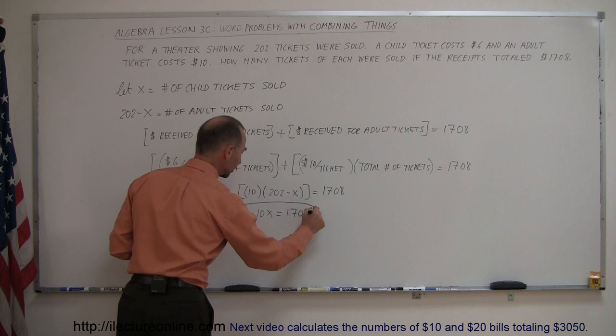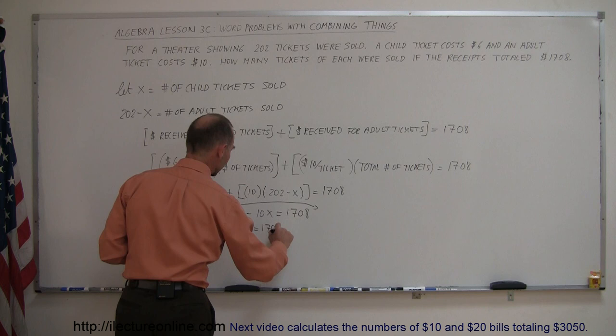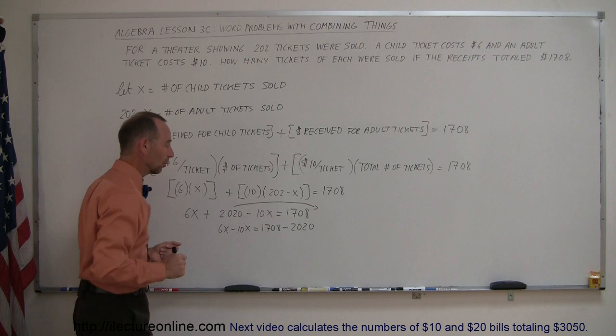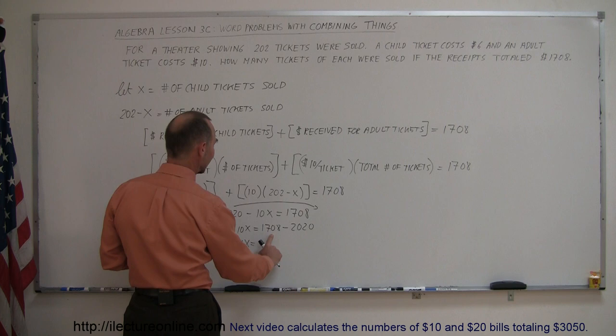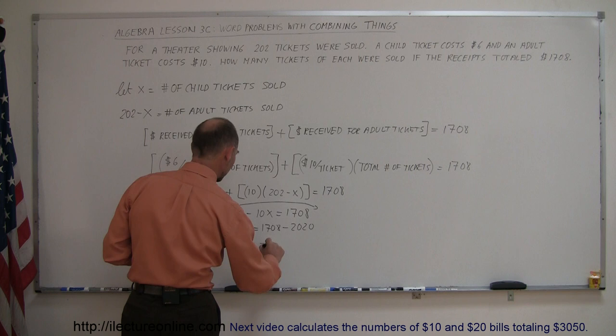We end up with 6X minus 10X equals 1,708 minus 2020, because when we move the 2020 over, the sign changes to a negative. We combine like terms. This is minus 4X on the left side equals, the difference between this and 2,000 is 292, and on the 20, that would be 312. So minus 312.